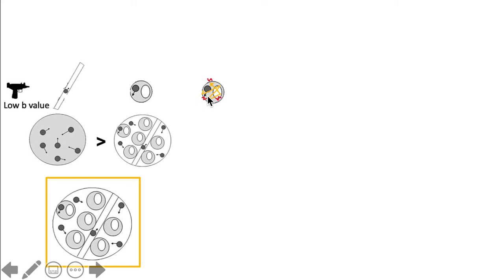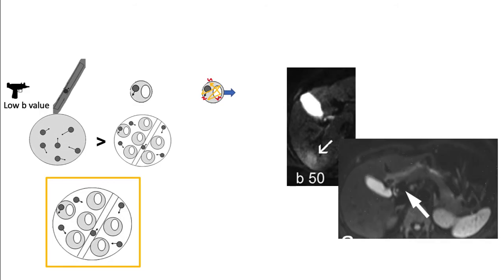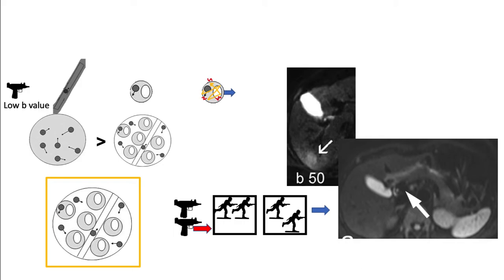When we fire a low B value or low gradient to these tissues, water within the blood vessels appears dark while tumor is bright. This is because the water within blood vessels is fast moving. Therefore, when we hit the second gradient, the protons have already moved, hence there is a decrease in signal.